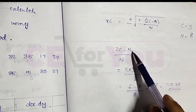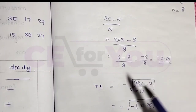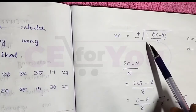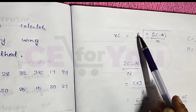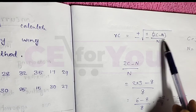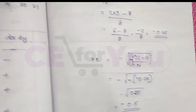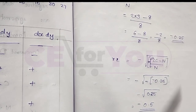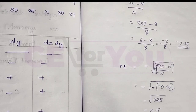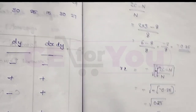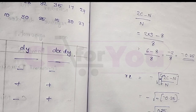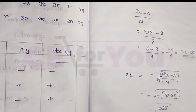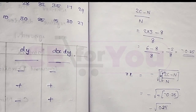When the value of (2c minus n) divided by n is negative, we apply the negative sign. So the formula gives a negative correlation. The coefficient of correlation by the Concurrent Deviation Method is minus root 0.25. Thank you.